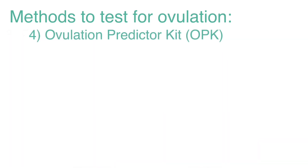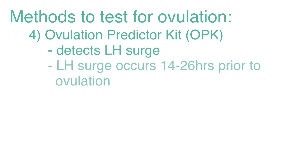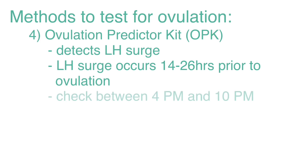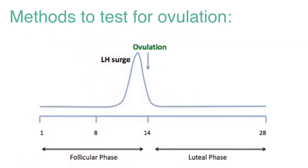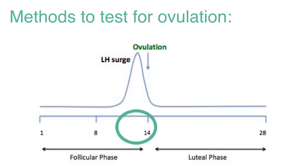The next test is the ovulation predictor kit. This will detect when the LH surge has occurred, and it generally occurs 14 to 26 hours prior to ovulation. The test is best performed between 4 p.m. and 10 p.m. because the LH surge begins to rise in the early morning hours and it takes time to show up in the urine. These are helpful if a patient cannot have frequent intercourse during the fertile window and needs to schedule intercourse on a certain day. The best day to have intercourse is on the day the ovulation predictor kit is positive and the following day.